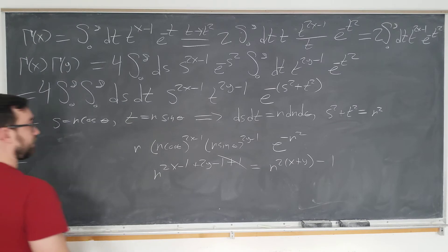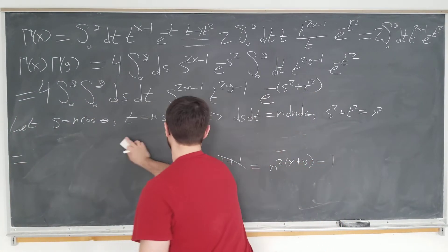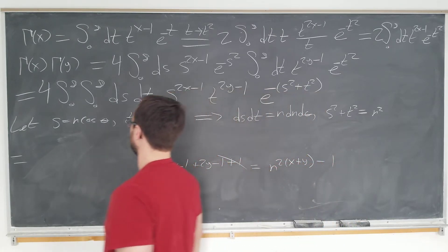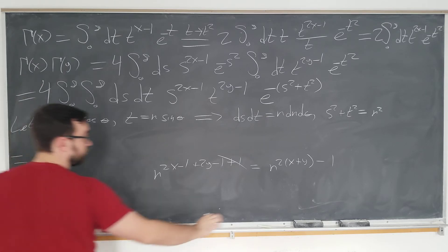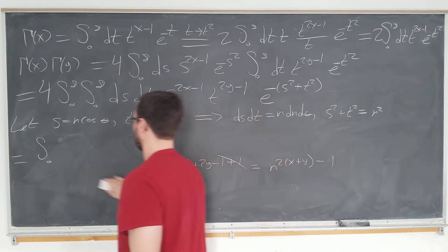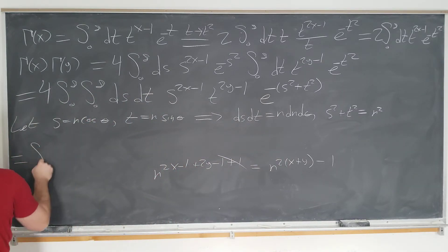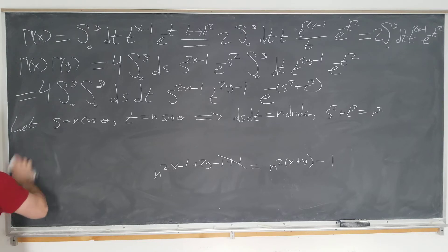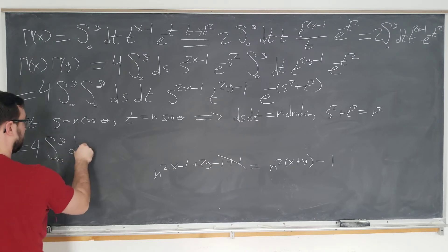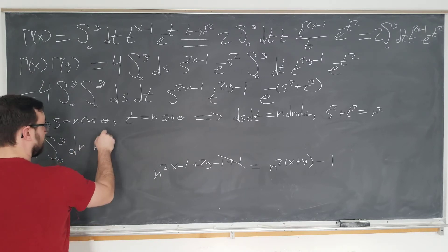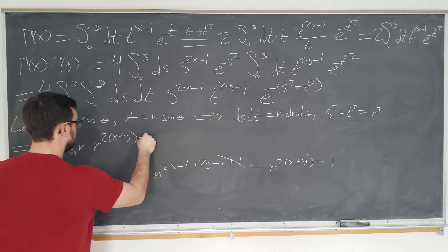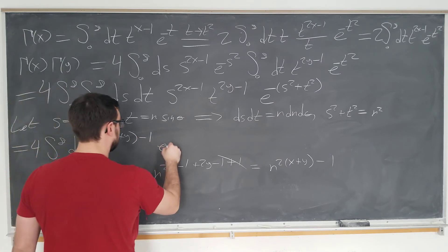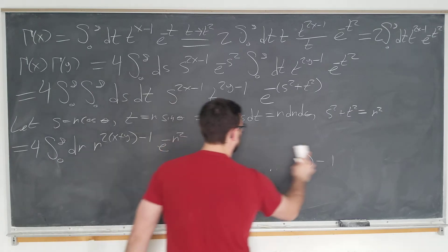So, our integral is now going to be, okay, we're going to separate. So, we're going to have integral from zero to infinity. Sorry, it's a bit messy. Four, it's a factor of four out front. And the r variable. Okay, that's what we have down here. So, we have r to the 2x plus y minus 1. And we have our Gaussian. And now for the theta integral.